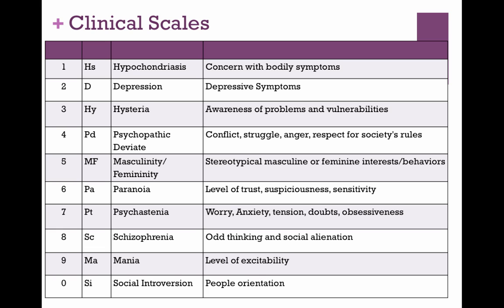Scale nine is the mania scale, and it picks up on a level of excitability. People with this may have accelerated speech, delusions of grandeur, flight of ideas, and may start tons of different projects. They may have a grandiosity. So you could imagine a two-nine profile — depression and mania — showing some bipolar tendencies.